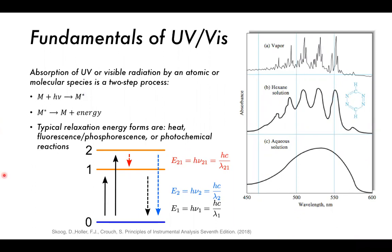The molecule M is absorbing some light which we supply to it, and that forms an excited state. The excited state eventually dissipates that energy as it relaxes back down — sometimes as light, sometimes as heat, and sometimes a photochemical reaction happens like a degradation reaction. This is why a signboard put out in direct sunlight may fade over years — the dye molecules gain energy from the sun, then relax via a photochemical degradation reaction, destroying the dye molecules.